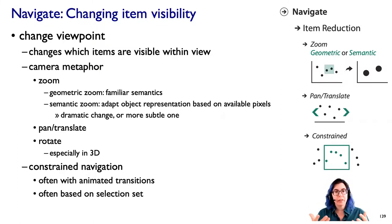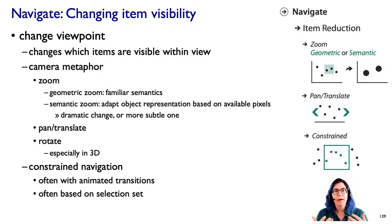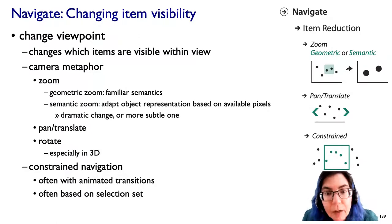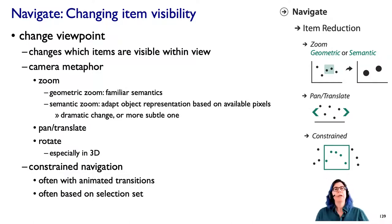Now let's spend a few minutes talking about navigation. Fundamentally we can think about navigation as a way to change what items we can see. We have this metaphor of a virtual camera — just like moving around in the world, you can change what's visible by moving. You can zoom in. There's the familiar semantics of zooming in close or further away making things bigger and smaller. There's also what's called a semantic zoom, where you don't just try to simulate reality but actually adapt the representation of an object based on how many pixels are available to draw it within — so you can do much more dramatic things than simple geometric zooms.